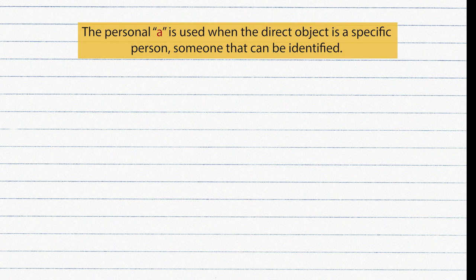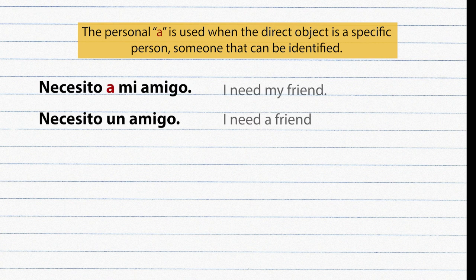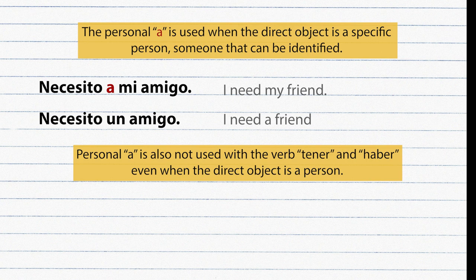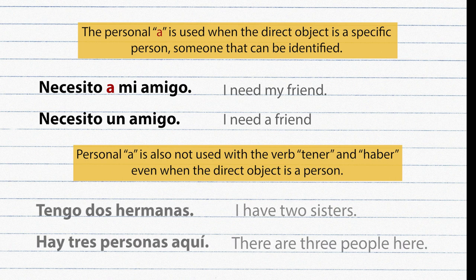The personal A is used when the direct object is a specific, identifiable person. It is not used when the direct object doesn't refer to anyone specific. For example: 'Necesito a mi amigo' — my friend is a specific person. But 'Necesito un amigo' — a friend is not specific, so no personal A. Also, the personal A is not used with the verbs tener or haber even when the object is a person: Tengo dos hermanas. Hay tres personas aquí.